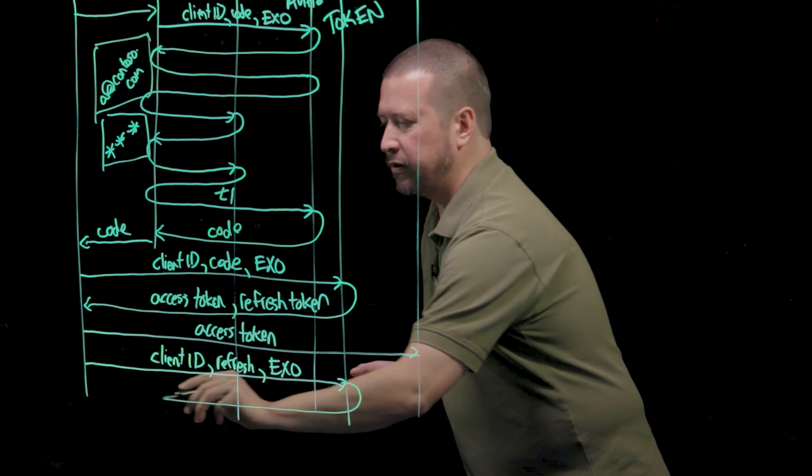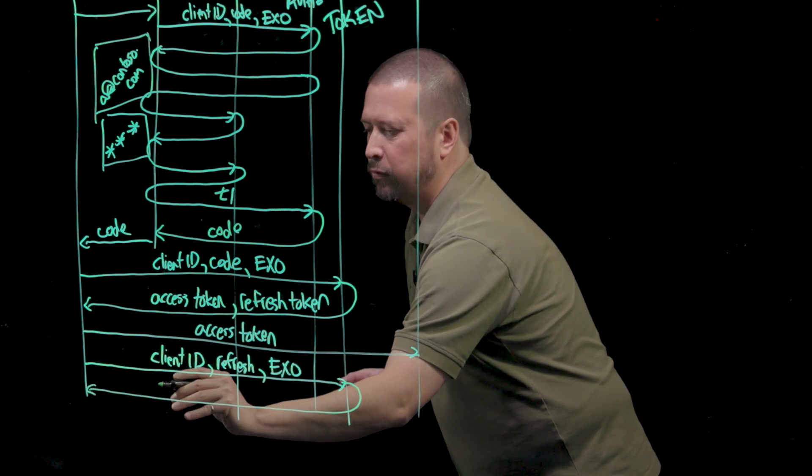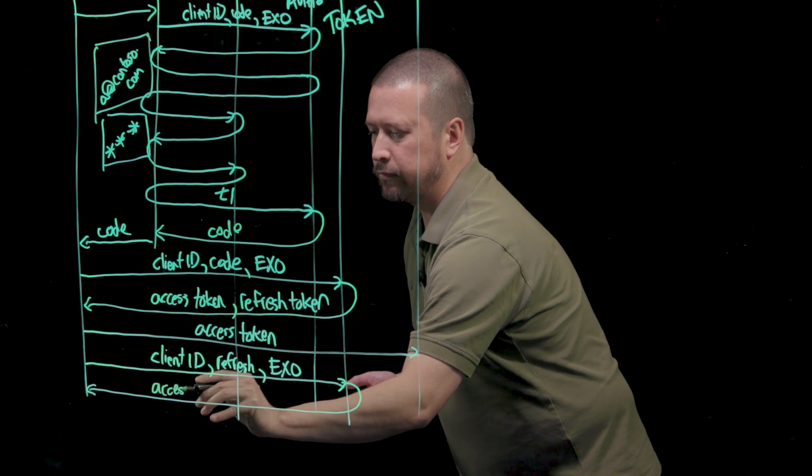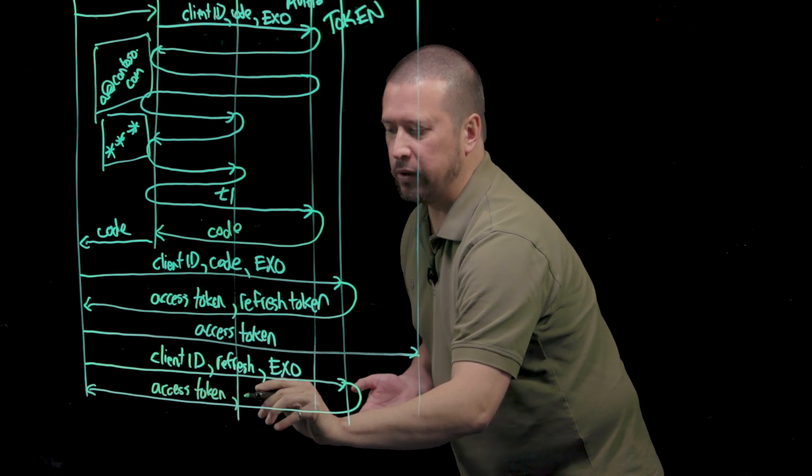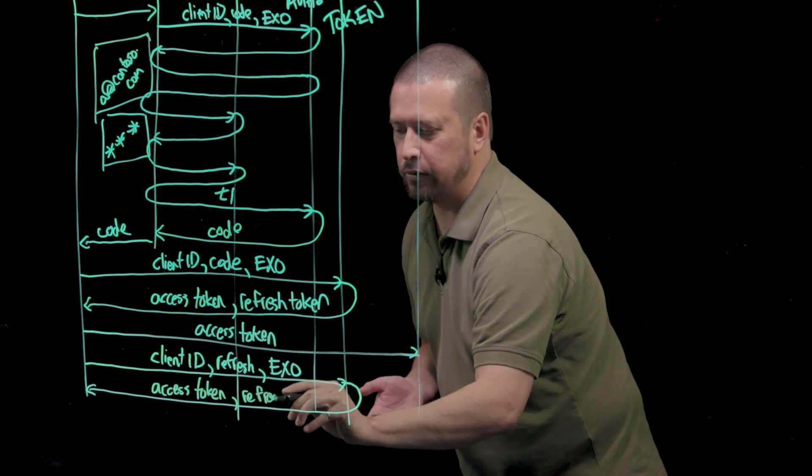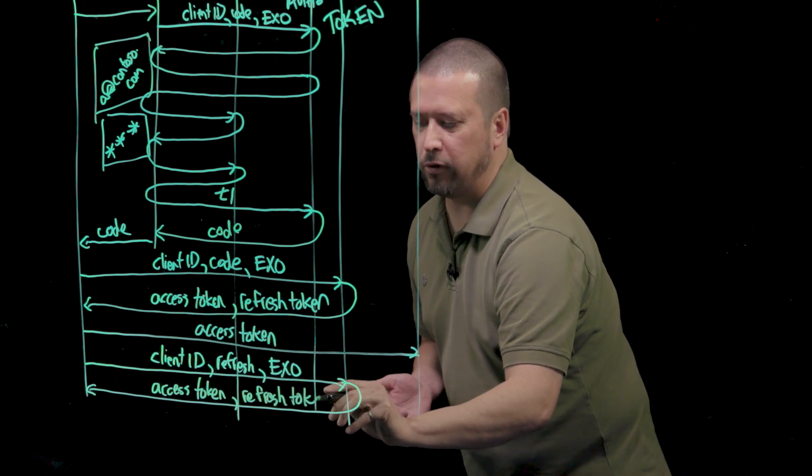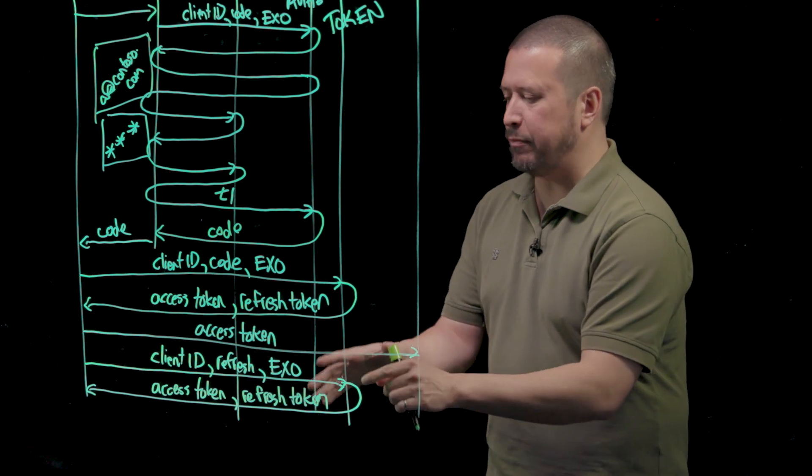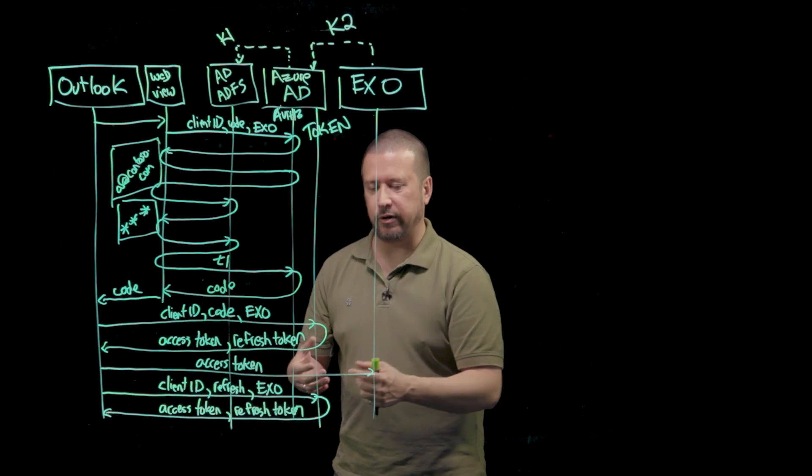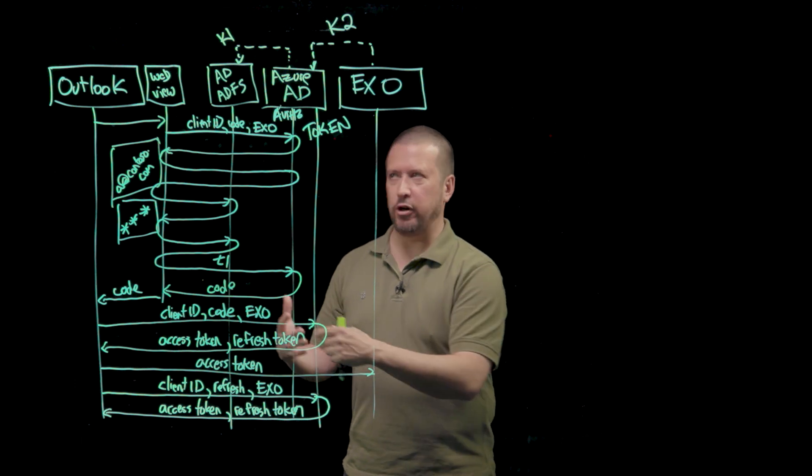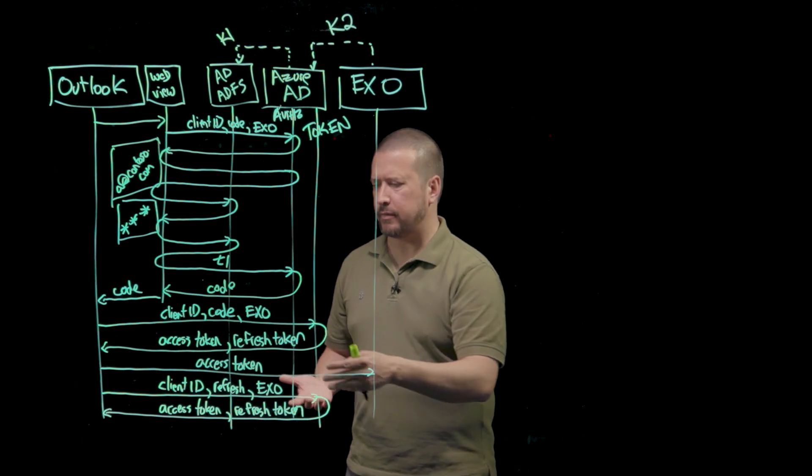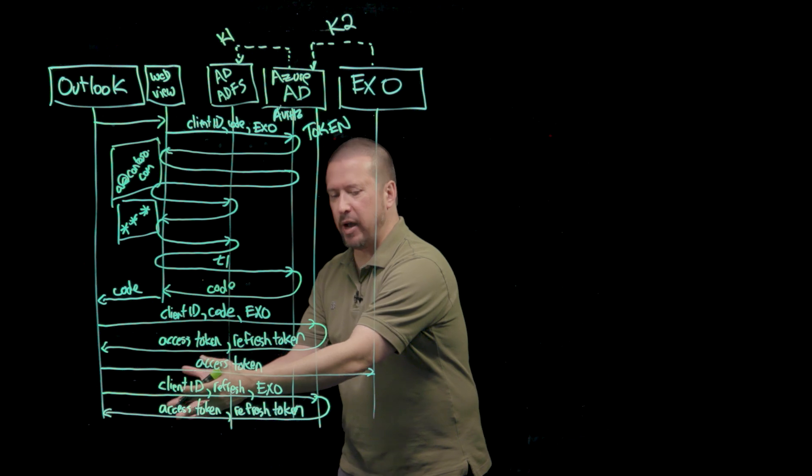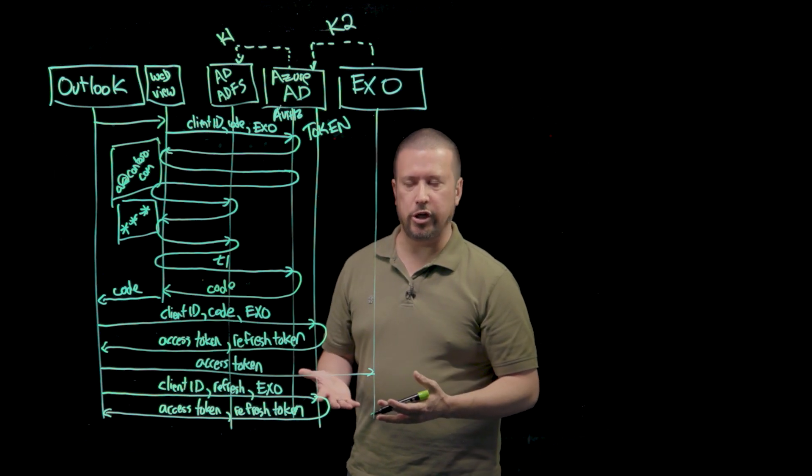Azure AD will usually send a new refresh token that Outlook is now going to cache and replace the previously cached version. That happens any time Azure Active Directory needs to update what's in the refresh token that it's given to Outlook. And then Outlook can take the new access token and use it to call Exchange again.